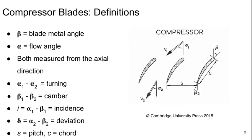Let's get through some definitions, starting with compressor blades. The flow here is coming from top to bottom. Beta are the blade metal angles. Beta 1 is the blade metal angle at the leading edge. Beta 2 is the blade metal angle at the trailing edge. Alpha is the flow angles. Alpha 1 is the input flow angle ahead of the blades. Alpha 2 is the exit flow angle downstream of the blades.